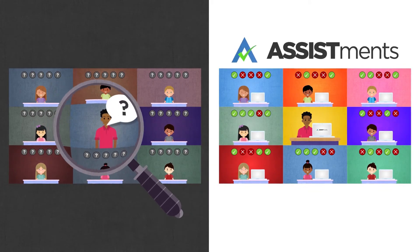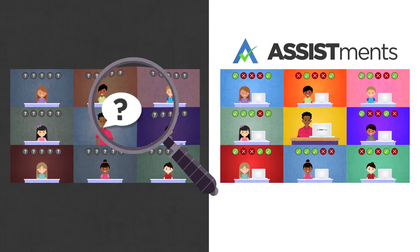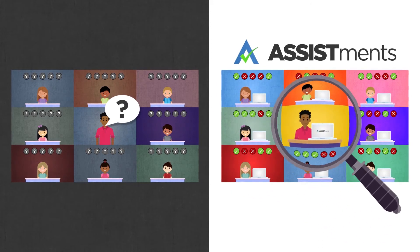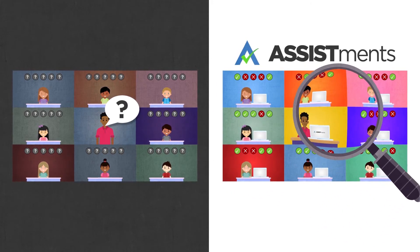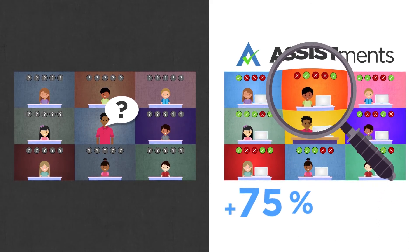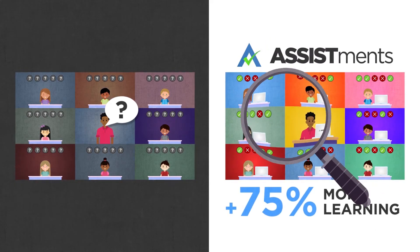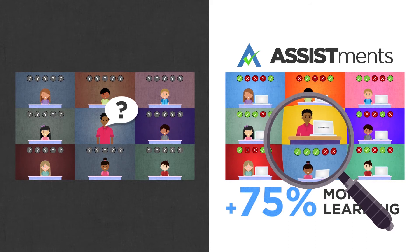First, teachers reliably changed their classroom practices. Second, students reliably scored higher on a standardized measure. The effect was large, 75% more learning when compared to the learning that normally happens in a year.